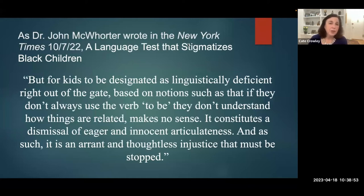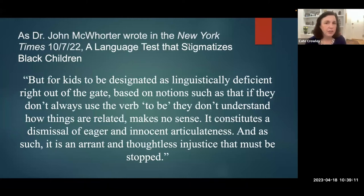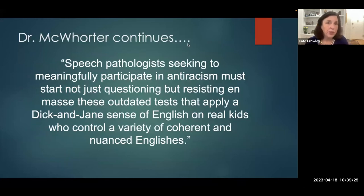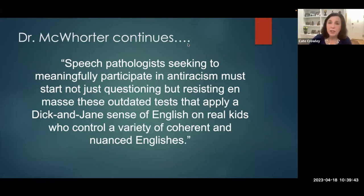As John McWhorter wrote in the New York Times on October 7, 2022, in an article called 'A Language Test that Stigmatizes Black Children': For Black children to be designated as linguistically deficient right out of the gate based on notions such as if they don't always use the verb 'to be,' they don't understand how things are related — makes no sense. It constitutes a dismissal of eager and innocent articulateness and is an errant and thoughtless injustice and must be stopped. Dr. McWhorter continues: speech pathologists thinking to meaningfully participate in anti-racism must start not just questioning, but resisting en masse these outdated tests that apply a Dick and Jane sense of English on real kids who control a variety of coherent and nuanced Englishes.